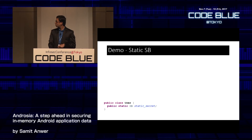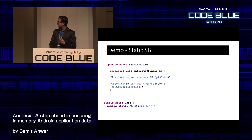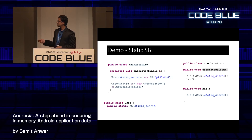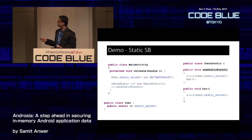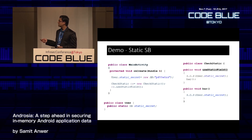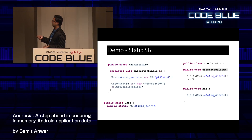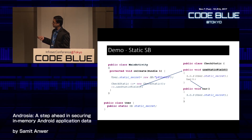For static StringBuilder fields, consider a demo with three classes. The main activity's onCreate defines a string assigned to a static field 'staticSecret' with value 'password', then calls useStaticField of CheckStatic class. Inside useStaticField, staticSecret is used in a println statement, then bar is called, which also uses staticSecret. The last use is clearly inside bar, so instrumentation should happen right after that last use.